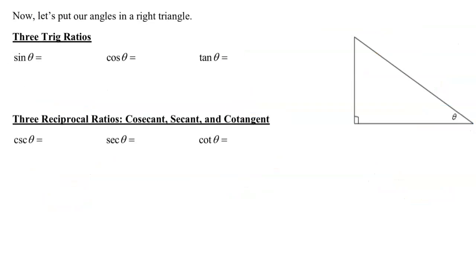Very important information coming up. We're going to put our angles into a right triangle and use facts from geometry to figure out what the three trig ratios — sine theta, cosine theta, and tangent theta — will be inside the unit circle. Then we'll introduce three new ratios called the reciprocal ratios: cosecant, secant, and cotangent. On the triangle, the angle is theta, the base is x, the height is y, and the hypotenuse is r, standing for radius.